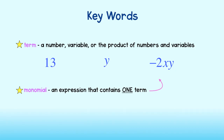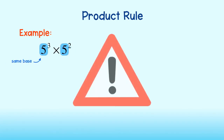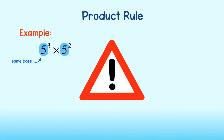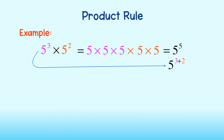Let's take a look at the first rule. The product rule applies when multiplying two numbers in exponential form. Notice these numbers have the same base — this will only work if they have the same base. If we were to write this out as repeated multiplication, we would get 5 times 5 times 5 times 5 times 5, or 5 to the fifth power. Notice that this is the result of adding the exponents. When multiplying two numbers in exponential notation, we will keep the base and add the exponents.